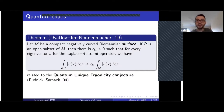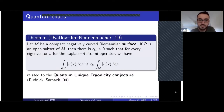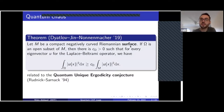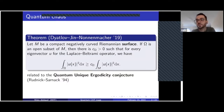When you are on a compact negatively curved Riemannian surface, there is a uniform version of this unique continuation principle, meaning not only can it not vanish on an open set, but the mass carried by an open set is uniformly bounded from below, uniformly with respect to eigenstate. This is related to the Quantum Unique Ergodicity Conjecture formulated by Rudnick and Sarnak.